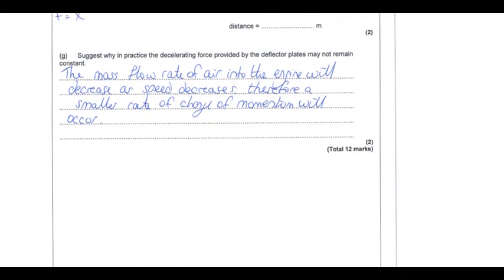Why won't the decelerating force from the deflector plates remain constant in practice? As the aircraft slows down, the mass flow rate of air into the engine decreases — the engine moves forward into the air, so as speed decreases, less air is forced in. With a smaller mass flow rate, the rate of change of momentum of the air particles decreases, giving a smaller retarding force acting against the motion.